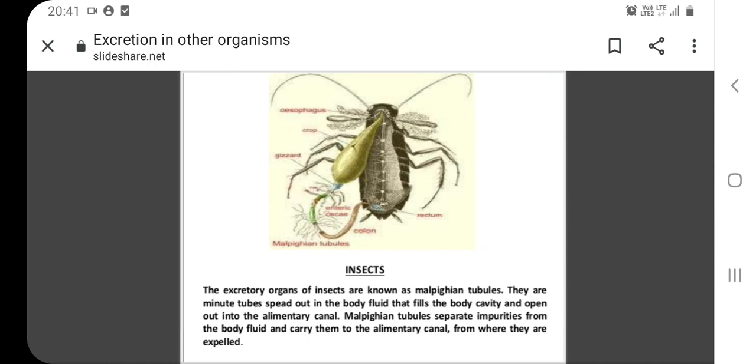Insects have the malpighian tubules. These tubules are usually found in pairs, and the number of tubules varies. Their number could be as many as 500.